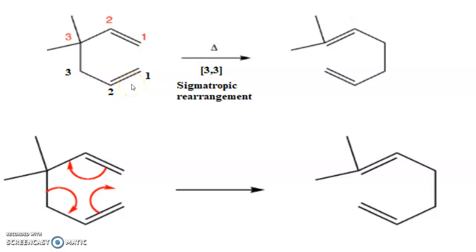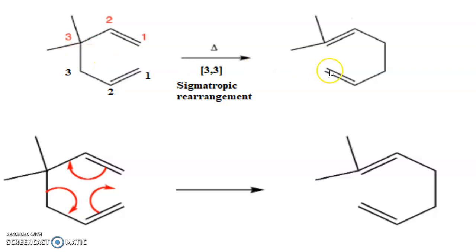Here is another example of Cope rearrangement. This is again a 1,5-diene system. This bond shifts here, this bond shifts here, and this bond forms between the 3,3 positions. The product and the starting material are structural isomers of each other, with bond breaking between the 3,3 carbons.